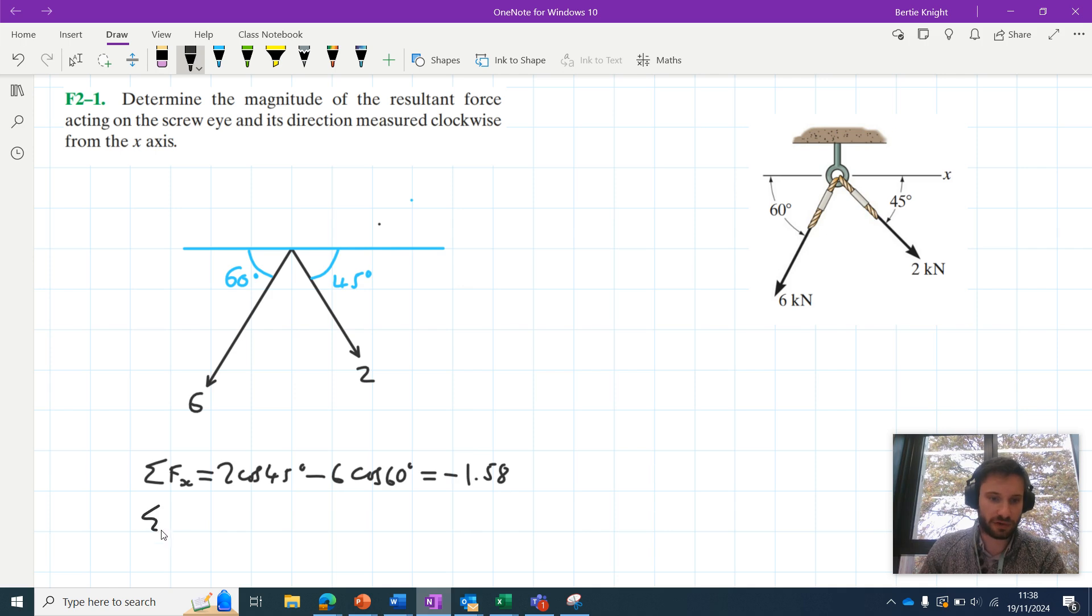We can then move on and resolve vertically. We can say that the sum of the y components here is minus 2 sine 45 minus 6 sine 60. If you're unfamiliar with what I'm doing here, I'd suggest going to my other video which explains how to add vector quantities together. So when we add these vertical components together we get minus 6.61.